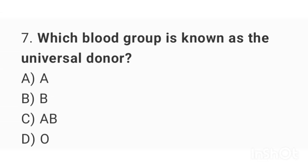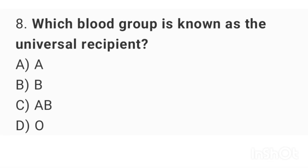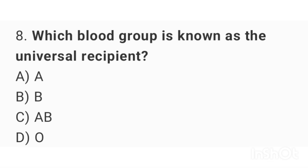Question number 7: Which blood group is known as the universal donor? The right answer is option D: O. Question number 8: Which blood group is known as the universal recipient? The right answer is option C: AB.